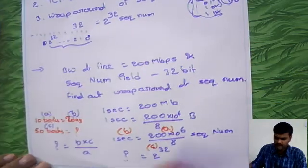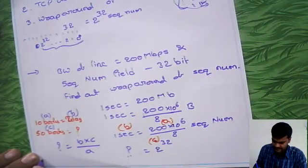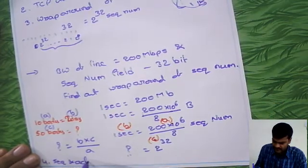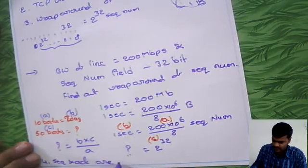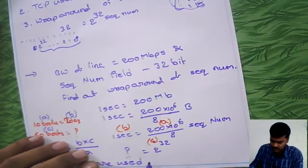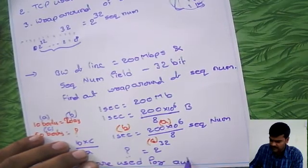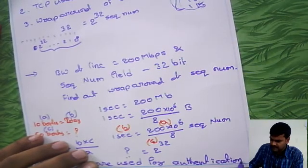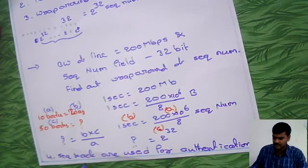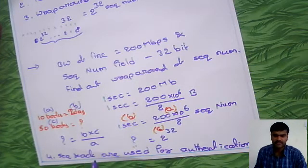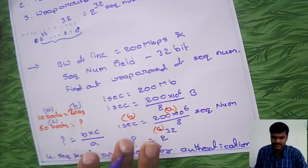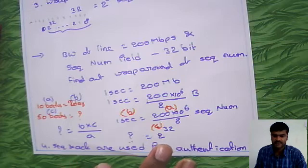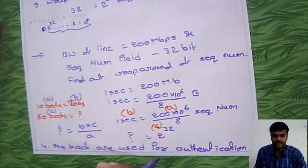And last characteristic is simply, this is sequence numbers and acknowledgement are used for authentication. So these are all together, these are sequence numbers and acknowledgement numbers are going to play a key role in TCP.